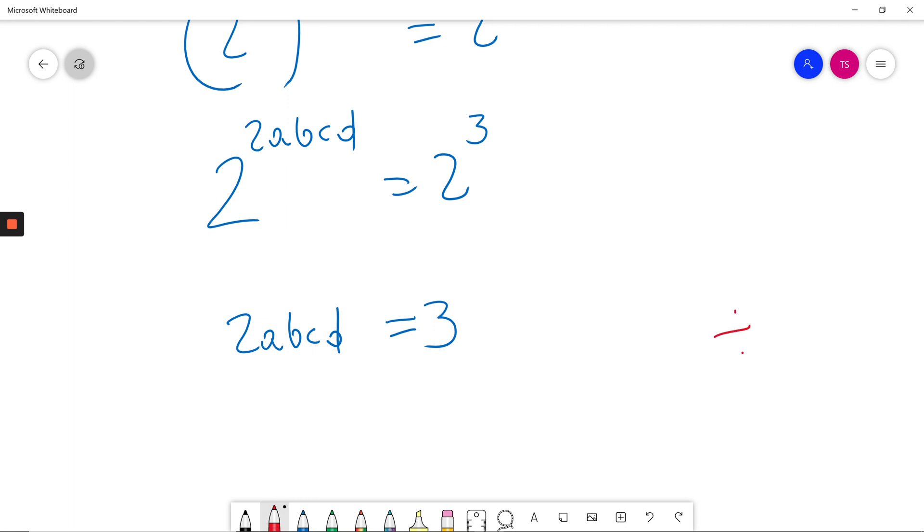At this moment I will divide both sides by 2. So I will get A times B times C times D will be equal to 3 divided by 2.